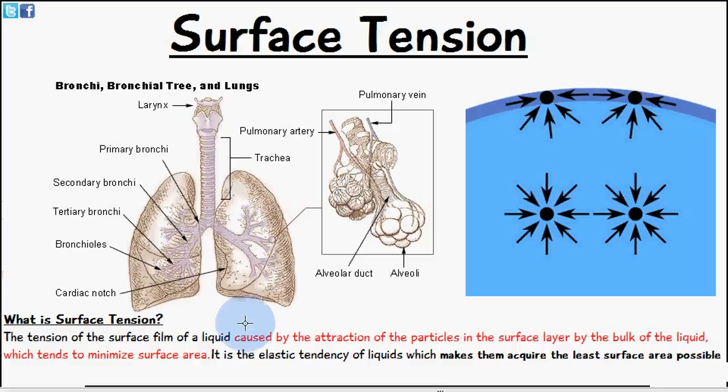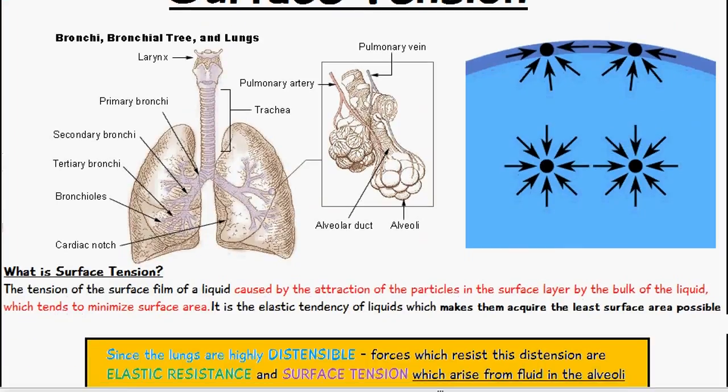Now surface tension, I've included a diagram here so you can see a brief picture showing you how surface tension actually works. The definition of surface tension is the tension of the surface film of a liquid caused by the attraction of the particles in the surface layer by the bulk of the liquid, which tends to minimize the surface area.